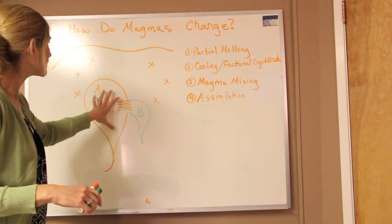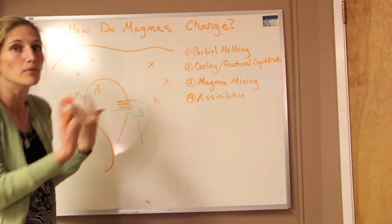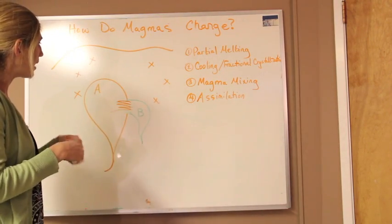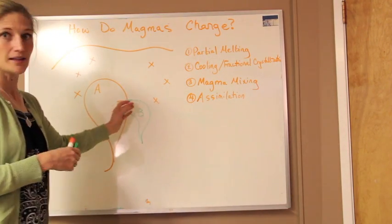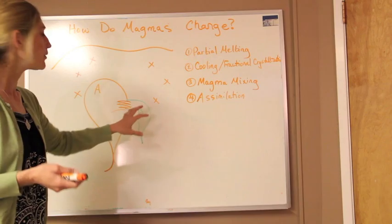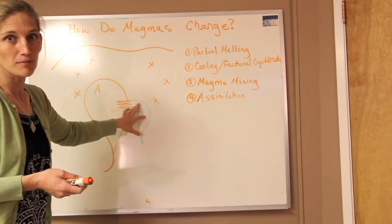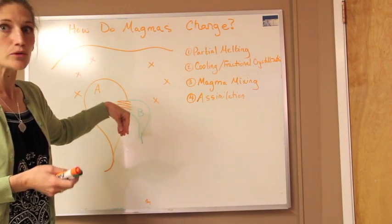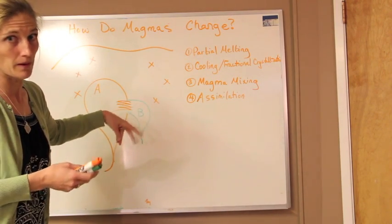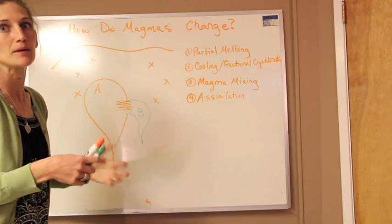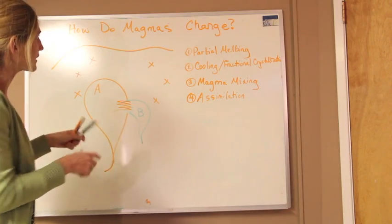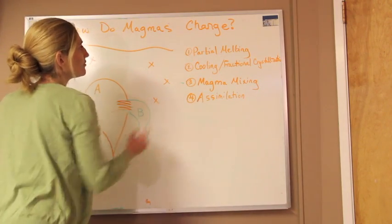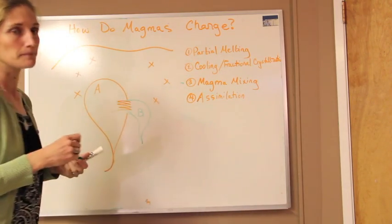So that intermediate is going to become more mafic over time, or we could look at it the other way around: take the mafic magma that's now mixing in some intermediate magma, and that one's going to become more felsic. So that's the process of magma mixing.